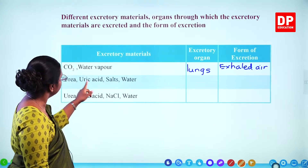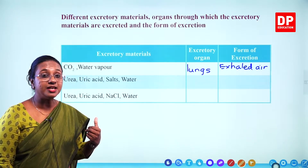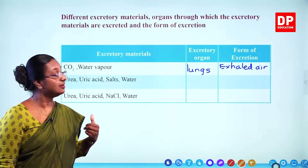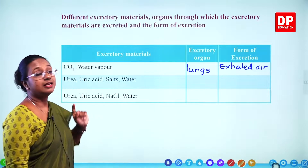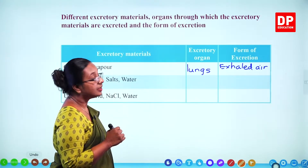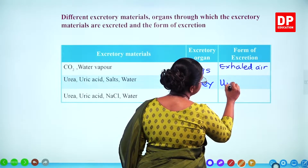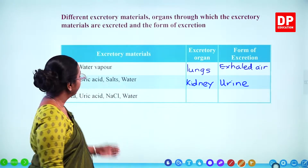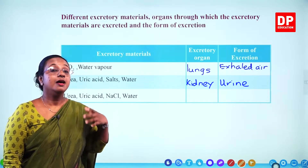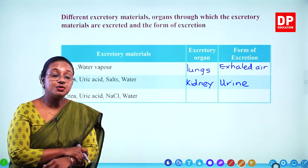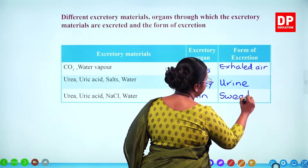Then we have urea, uric acid, salts, and water. Urea and uric acid are produced during the catabolism of amino acids in the liver. In addition, there are salts and water in the body. All these are excreted by the kidneys in the form of urine. Additionally, urea, uric acid, sodium chloride, and water are given out through the skin in the form of sweat.